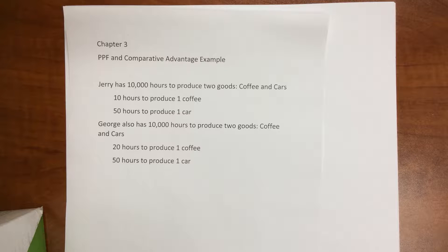His good friend George also has 10,000 hours to produce two goods, coffees and cars. For George, it requires him 20 hours to produce one coffee and 50 hours to produce one car. So we want to be able to graph both of these PPFs and then talk about who has comparative advantage in each good.